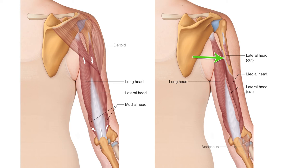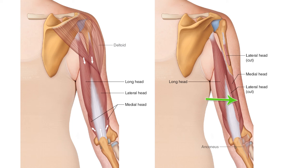Now we can better see that the medial head attaches along the medial surface of the posterior humerus and also along the lateral surface of the posterior humerus more distally. At the distal end of the arm, the medial head joins into the common tendon of the long head and lateral head.